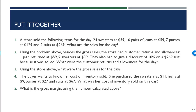Part one shows us what the store sold in a given day and asks us to calculate the sales for the day. Part two walks us through how we calculate our returns and allowances — if products are returned to the store or if the retailer had to give a discount — so it asks you to calculate the returns and allowances for the day.